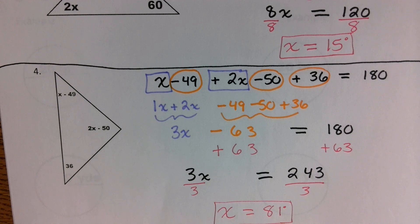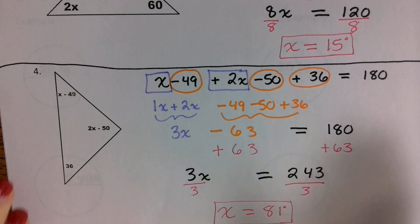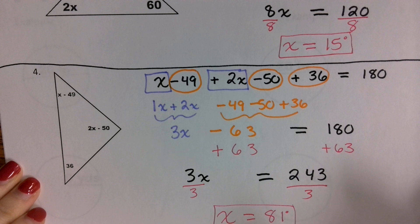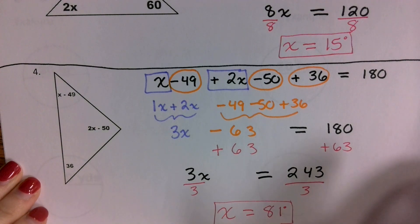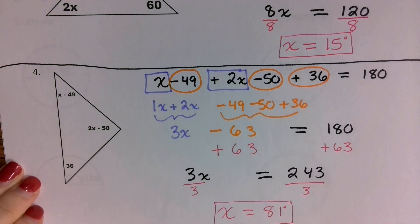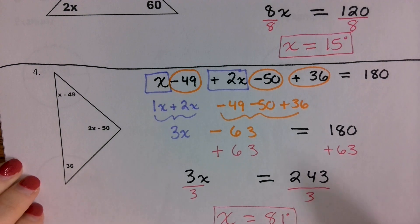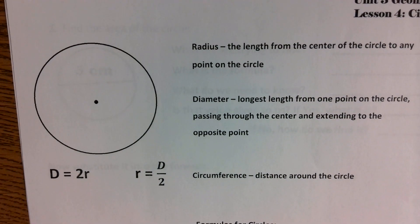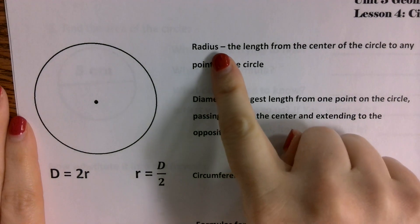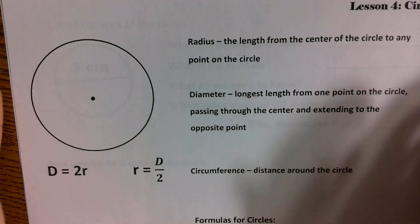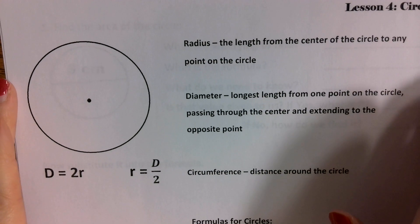Let's go on to the next lesson — we're going to be talking about circles today. You guys should have done a Prodigy game assignment last week discussing the parts of a circle. The parts of the circle we discussed in the Prodigy game were radius and diameter. I think they might have asked maybe one or two questions about circumference.